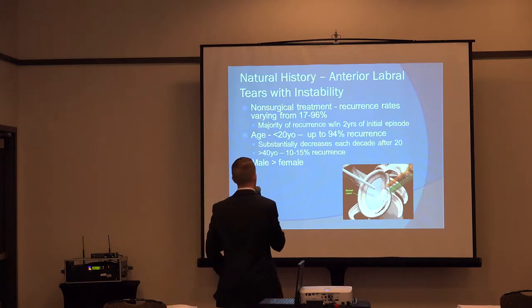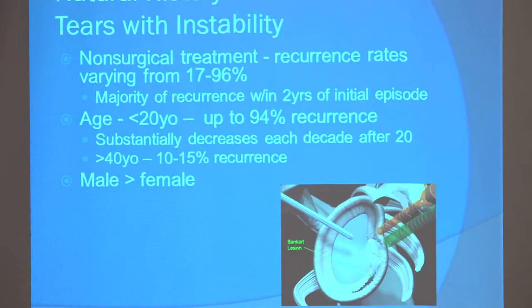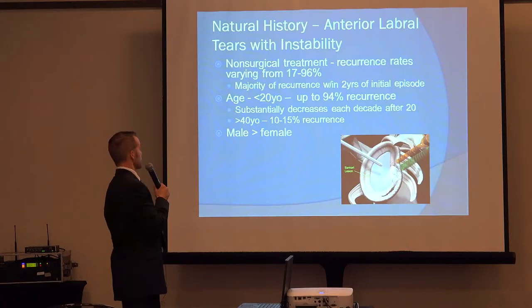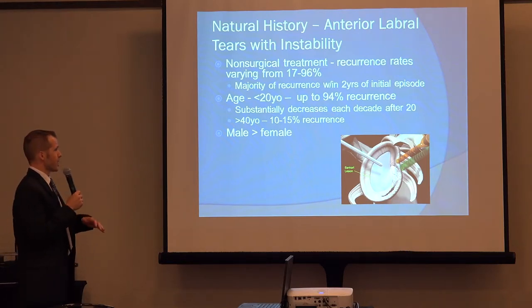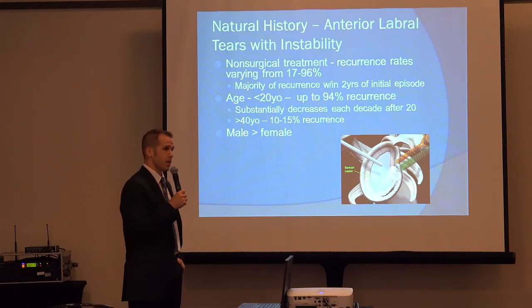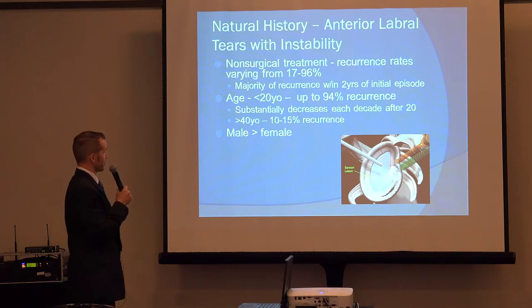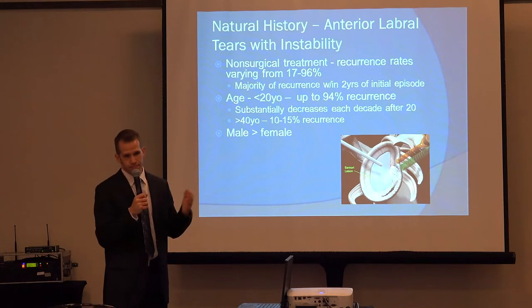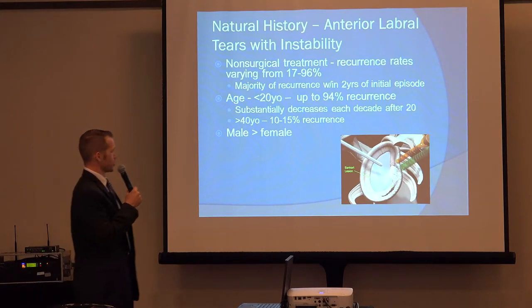Looking at the natural history of anterior labral tears and instability, the literature shows varying recurrence rates from 17 to 96%. The biggest factor that determines whether you're going to have recurrent instability is the age of the patient. Less than 20 years of age is when we see the highest recurrence rate — up to 94% — and that substantially decreases each decade after 20. Patients older than 40 have a recurrence rate of only 10 to 15%. So you're going to treat those types of patients significantly differently, being more aggressive with younger patients aged 18 to 25.